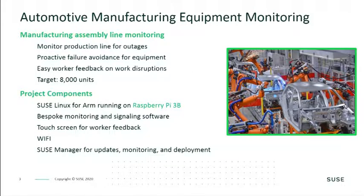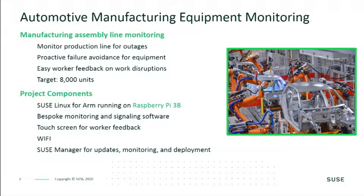At SUSE, we work with several automobile companies. One use case for Kubernetes at the edge we're working on is manufacturing equipment monitoring and maintenance. The requirement is for real-time quality control measurements to avoid downtime. This helps transition from waiting for things to break to proactively scheduling their maintenance. Our customers are running SUSE Linux for ARM on industrial Raspberry Pi 3Bs, and a good portion of our edge activities revolve around the Raspberry Pi.